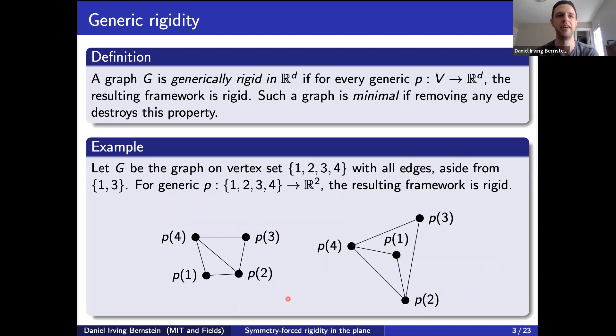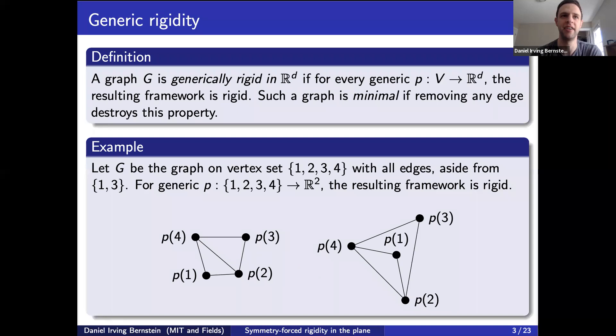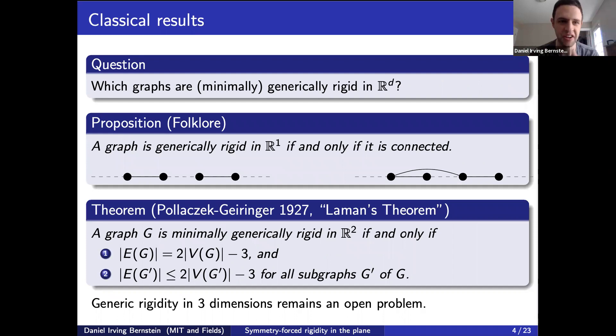As long as I choose the position function p sufficiently generically, whether or not the graph becomes rigid in d-dimensional space really only depends on the graph — I'm talking about local rigidity here. For example, if I take a five-cycle with a chord and place it in two dimensions, as long as I don't put two vertices on top of each other, this is always going to be rigid. So the most basic question in classical rigidity theory is: which graphs are minimally generically rigid in R^d?